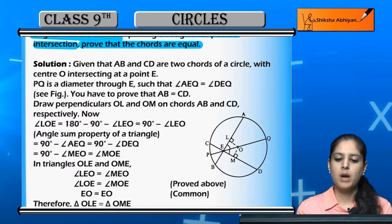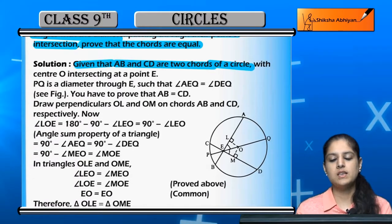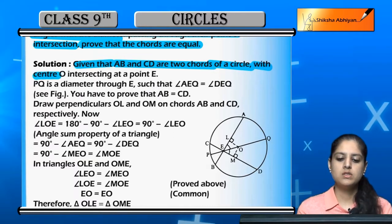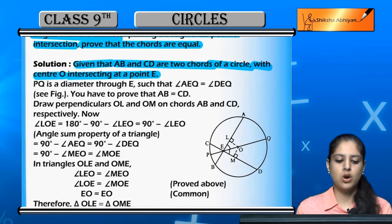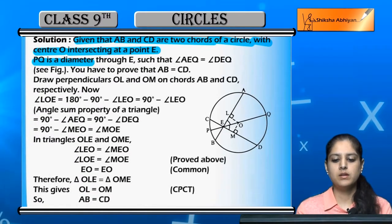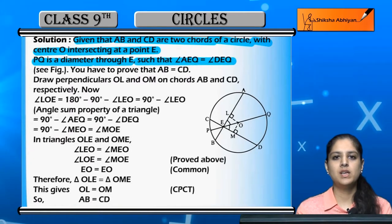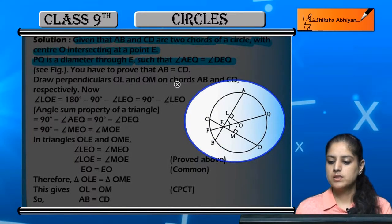We are given that AB and CD are two chords in one circle with center O. They intersect at point E. PQ is the diameter passing through point E. Angles AEQ and DEQ are both equal. This is the figure with center O and diameter PQ, with points A, B, C, D and intersection point E.